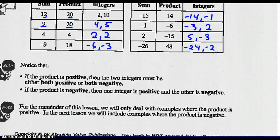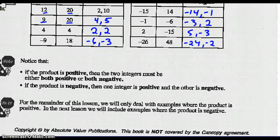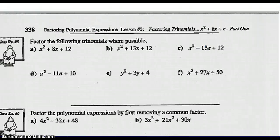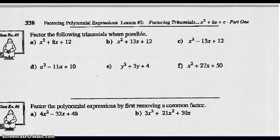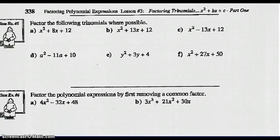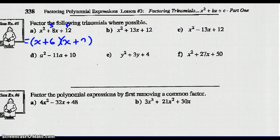For the remainder of the lesson, we'll only deal with examples where the products are positive, but next lesson we'll learn about the negative cases. So let's factor the following trinomials where possible. We know to get a trinomial we're going to need two binomials, and the only way to get x squared is to put an x in front of each bracket. What two numbers have a sum of 8 and a product of 12? Those are 6 and 2, both positive. So the factors are x plus 6 times x plus 2 — expanding that gives x squared plus 8x plus 12.